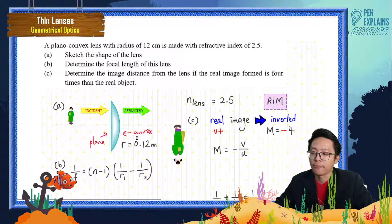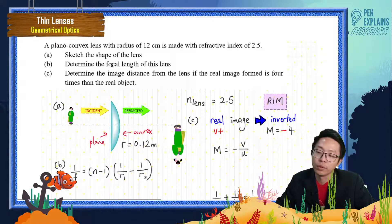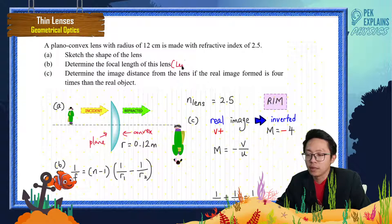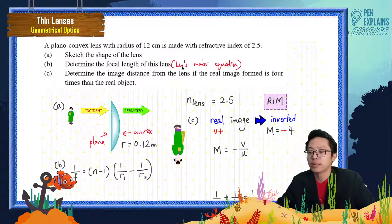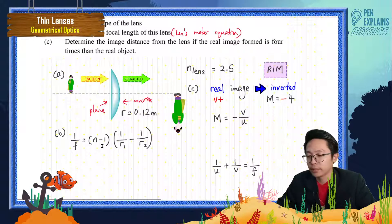Now determine the focal length of this lens. To find the focal length of a lens, always use the lens maker's equation. The lens maker's equation is: one over f equals (n minus 1) times (one over R1 minus one over R2).